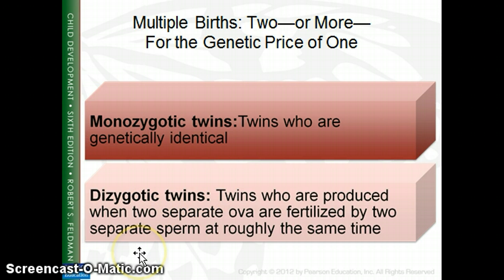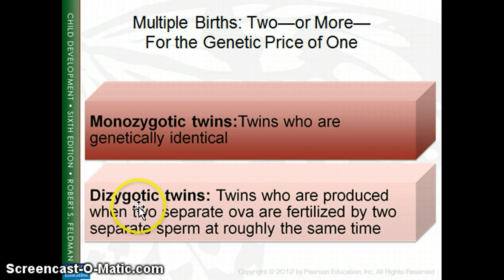Dizygotic twins occur when a woman's body releases two eggs and both are fertilized by separate sperm — those would be fraternal twins. They can be two boys, two girls, or one boy and one girl. Di meaning two, and zygote meaning fertilized egg.